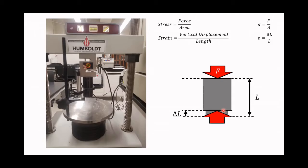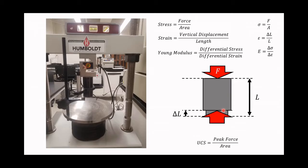When we combine strain with stress, we can calculate the Young Modulus as the differential stress with respect to the differential strain that we are applying on the rock. Then we can calculate the UCS as the peak force that the sample is able to hold over the area of the cylinder.